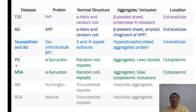Next: Parkinson's disease. The protein that accumulates is alpha-synuclein, and the lesion seen is called a Lewy body. The location is cytoplasmic, and it particularly affects the substantia nigra.